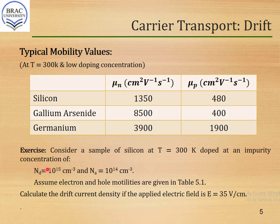There is a practice problem here. It states that in a silicon sample at T equals 300 K, doped at an impurity concentration of N_D equal to 10^15 per cm³ and N_A equal to 10^14 per cm³, using the electron and hole mobilities from the table, calculate the drift current density if the applied electric field is 35 volts per centimeter. You should solve this problem on your own. We will discuss it in detail in our next session. Thank you.